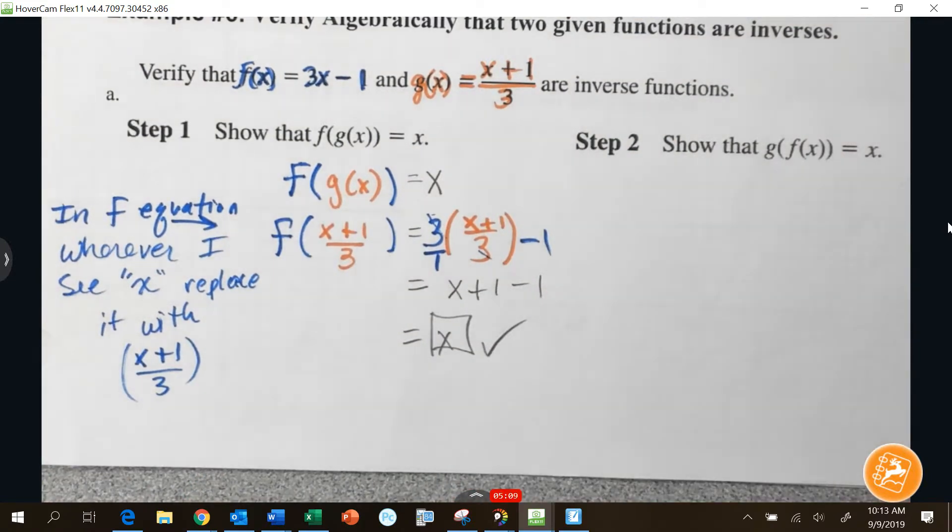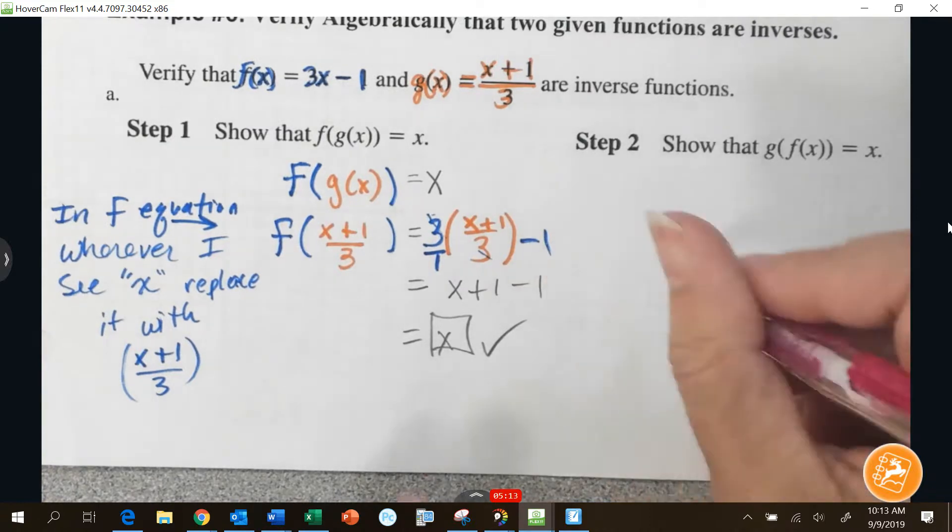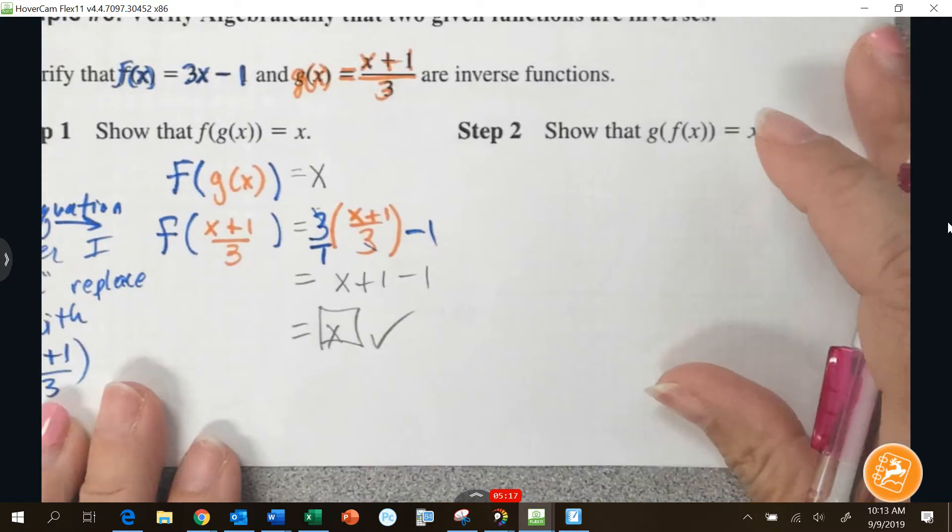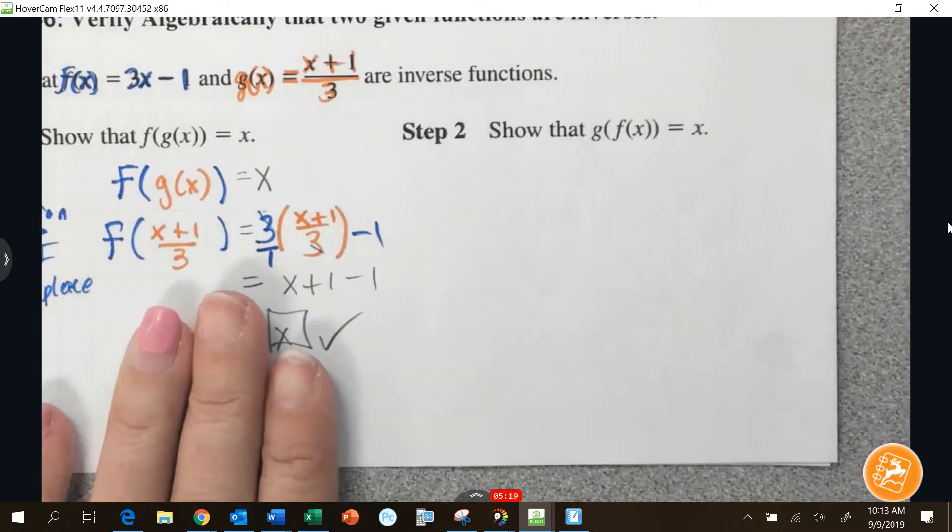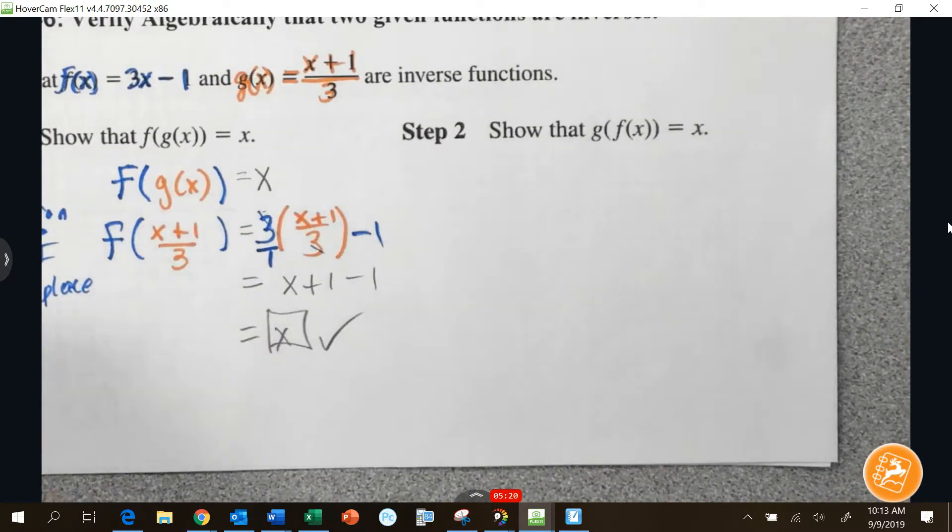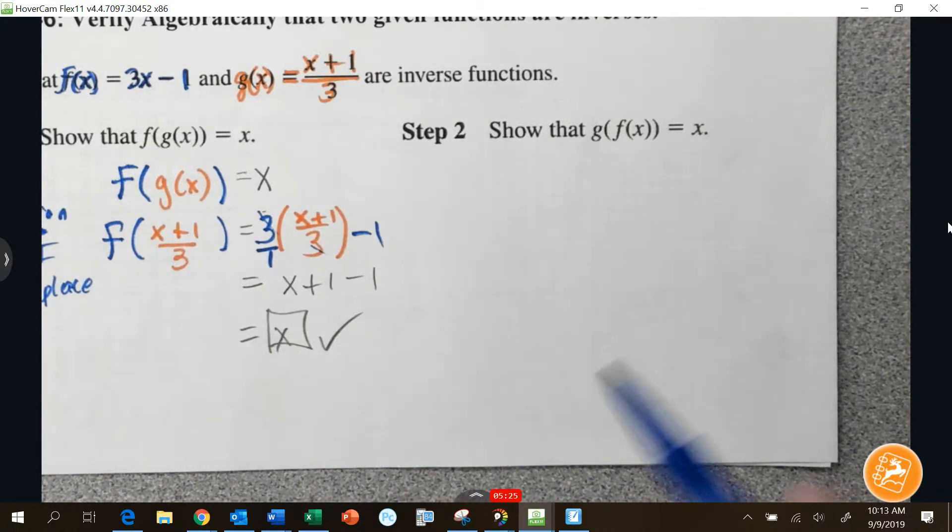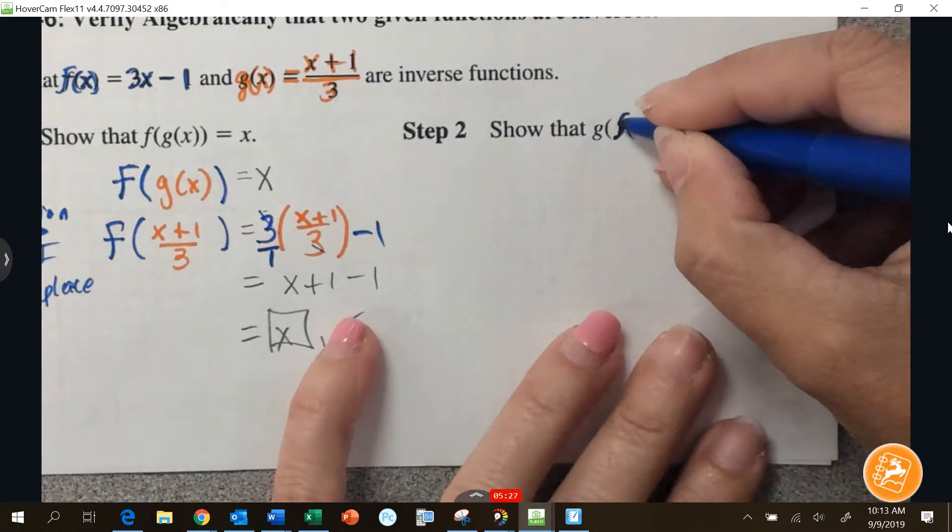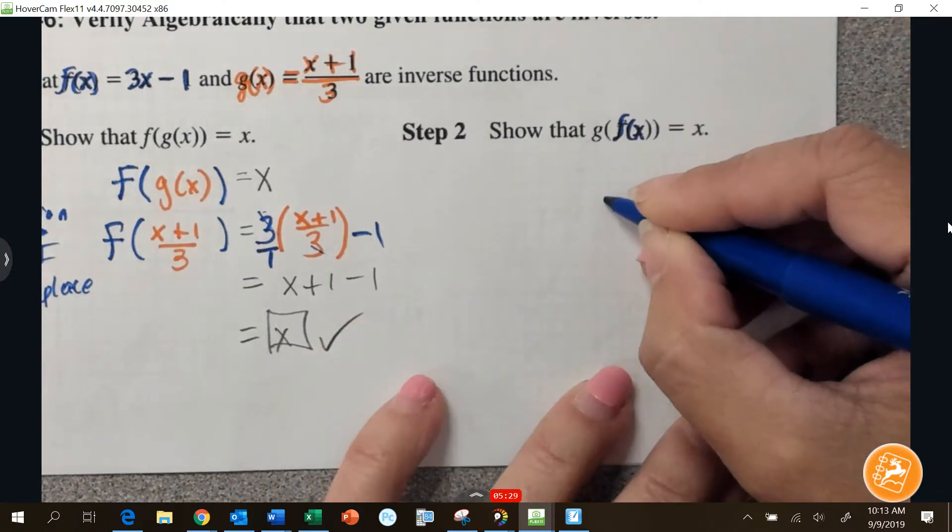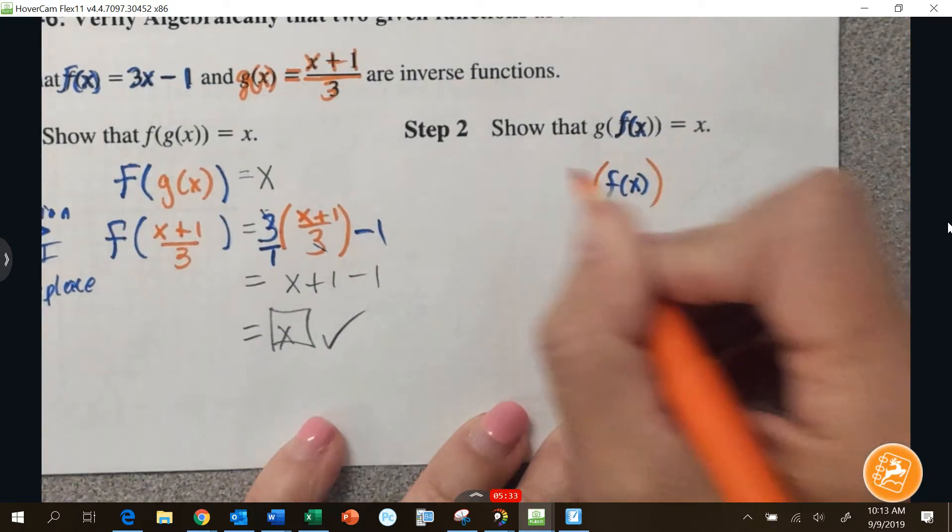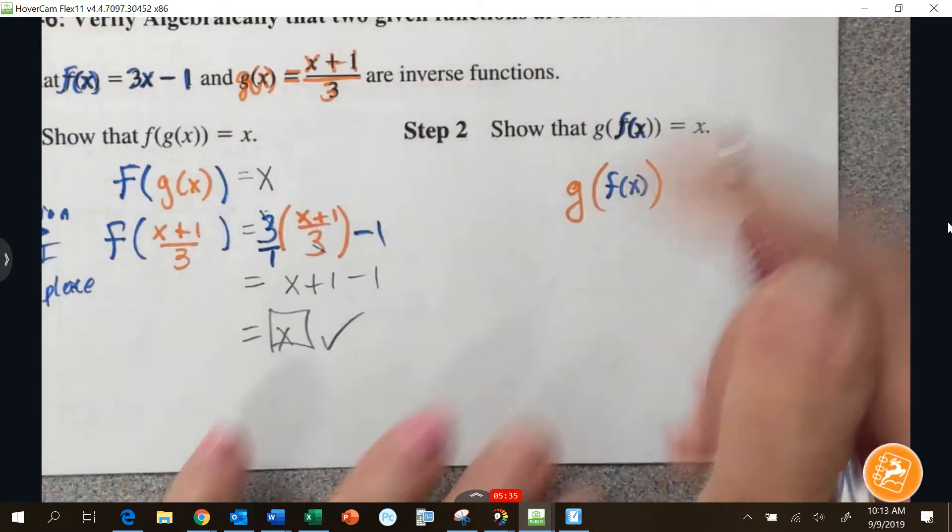This is like a proof. Remember proofs? Don't worry. We're not writing all the words. We're just doing the math, okay? So that is step 1. Step 2, we're going to do the exact same thing again, only we're going to put f of x inside of g of x. So I'm going to color code over here. My f is blue. My g is orange. And I have to show that that equals x.